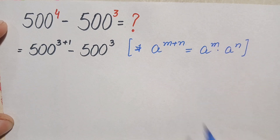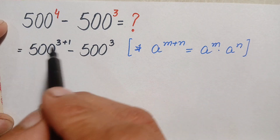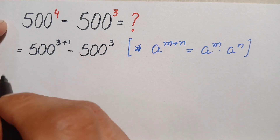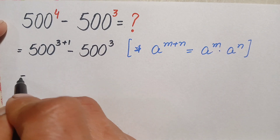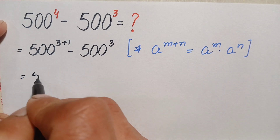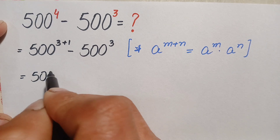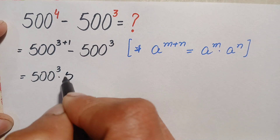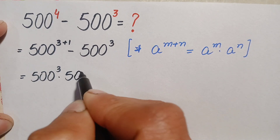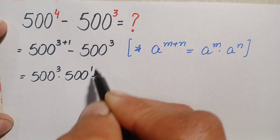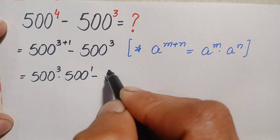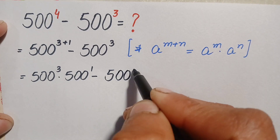Using this exponential identity, we will split the exponent and rewrite the first number. This becomes 500 raised to power 3 times 500 raised to power 1, minus 500 raised to power 3.